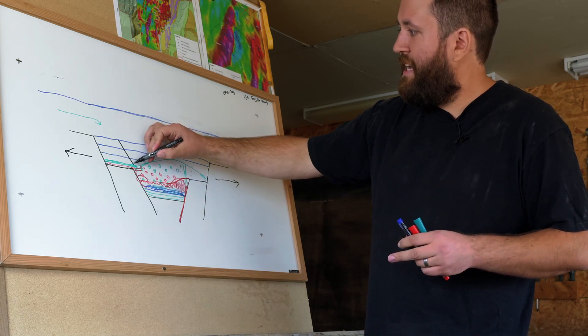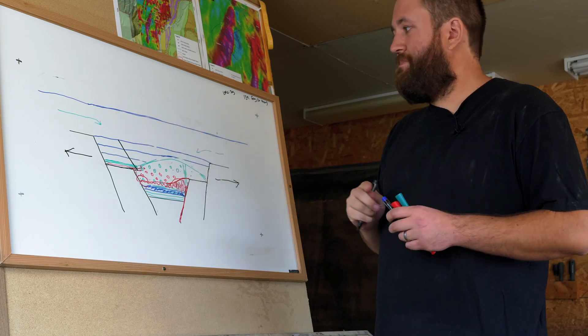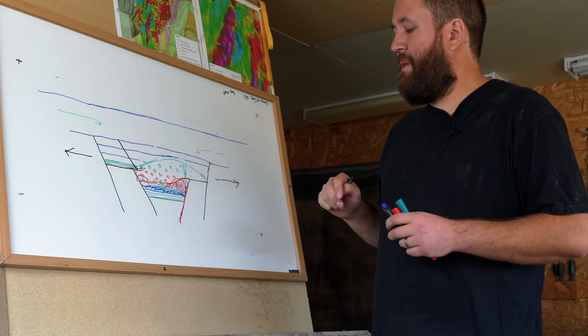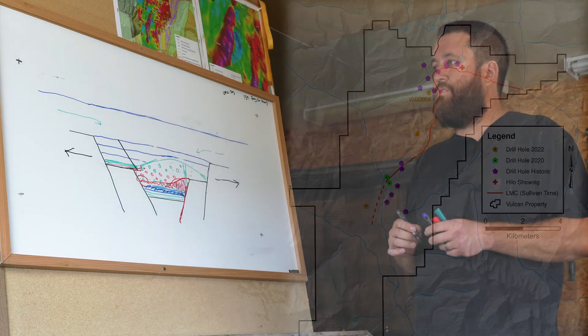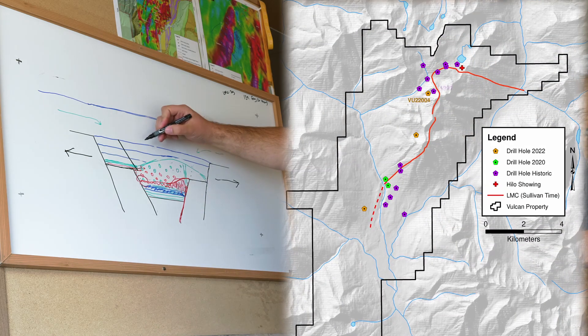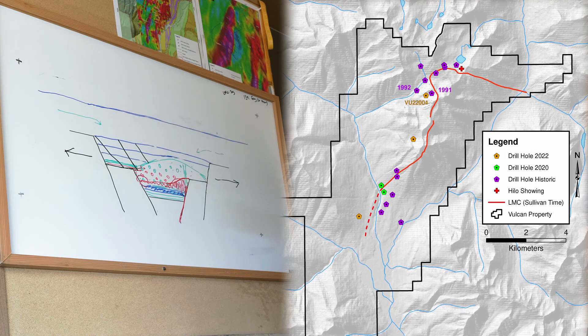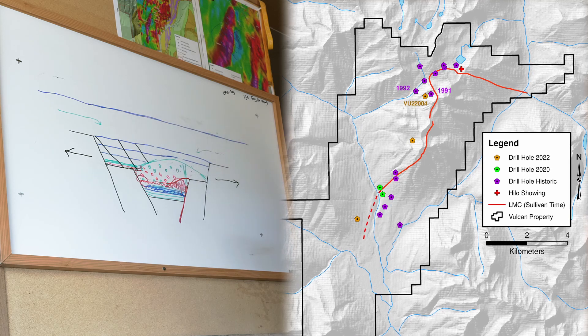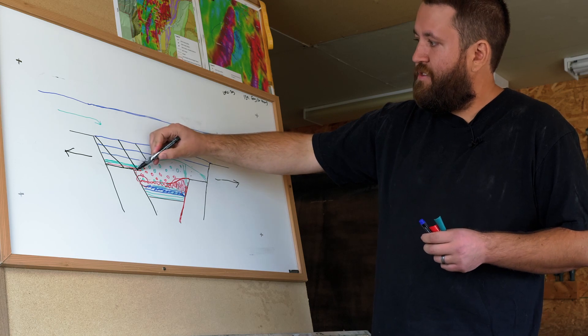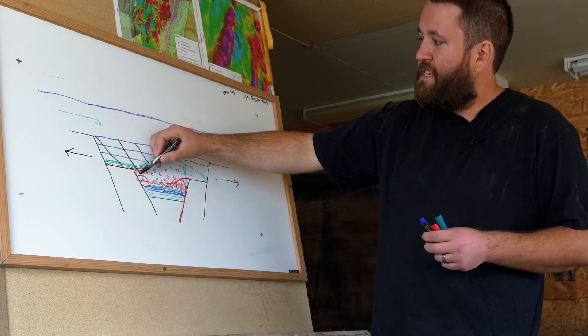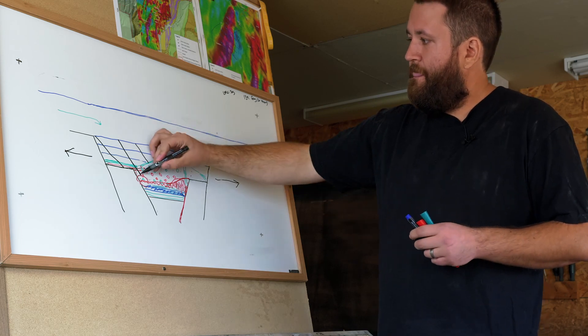We continued drilling through the LMC and intersected variably mineralized fragmental. At the top of the fragmental package, mineralization is quite weak and was previously intersected by two other drill holes in 1991 and 1992. In this program, we decided to drill through the fragmental to see if there was any mineralization missed by the previous holes.